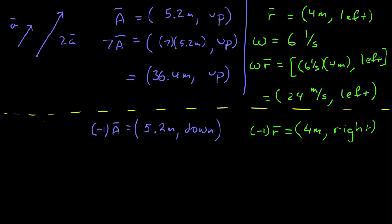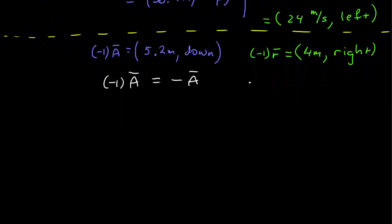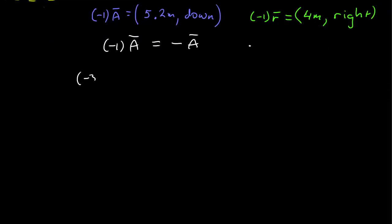Which would be to the right. Now, just a question of notation. We will sometimes represent negative 1 times a as negative a. Any other negative number is just a combination of those two. Negative 3 is equal to negative 1 times positive 3.